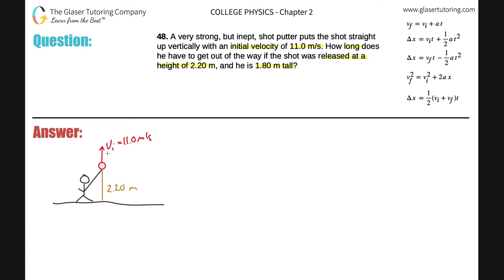What's basically going to happen is that this shot is going to go up and he's going to have to try to get out of the way because it's going to come back down on his head. It tells us that the height of the shot putter is 1.80 meters.